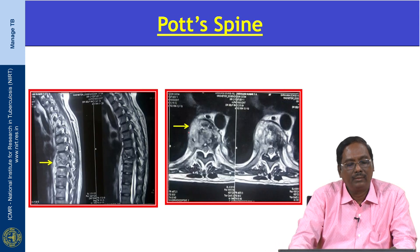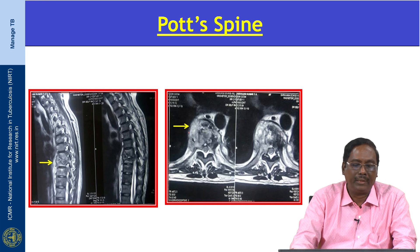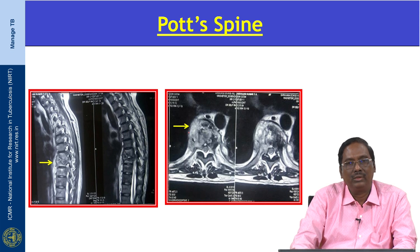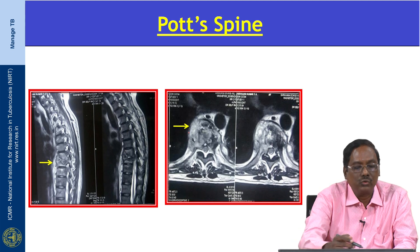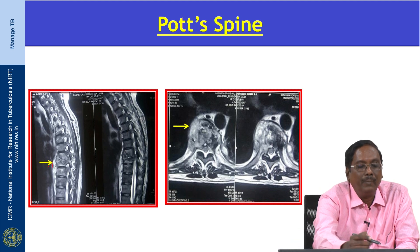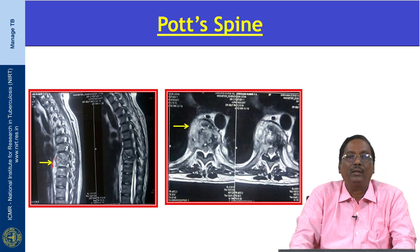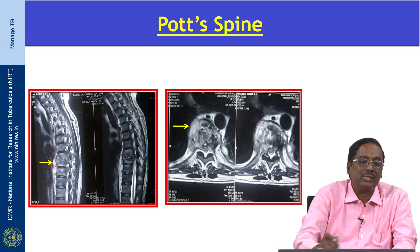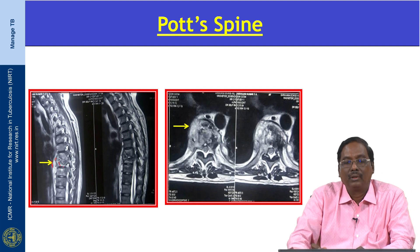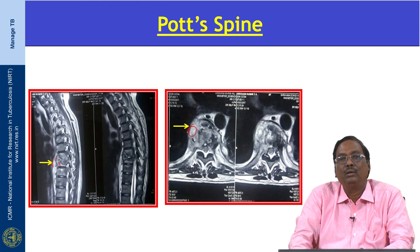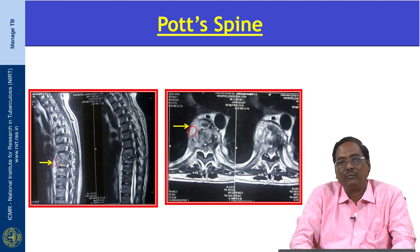MRI is more sensitive and specific for diagnosis of spinal TB. It provides early detection. This MRI showing a T2-weighted image demonstrates an epidural abscess with destruction of the vertebra and reduced disc size. This coronal axial view also shows destruction of the vertebrae.